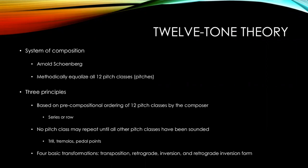12-tone theory is a system of composition pioneered by Arnold Schoenberg, through which he sought to methodically equalize all 12 pitch classes, or all 12 notes in an octave. In this system, all notes are assigned a numerical value, 0 through 11, rather than the more traditional A through G. This system is built upon three principles. First, each composition is based on a pre-compositional ordering of 12 pitch classes called a series or tone row, which is the primary row the entire piece is based upon. Second, no pitch class may repeat until all other pitch classes have been sounded—each note must be played at least once before any are repeated, with the only exception being certain ornamentations or pedal points.